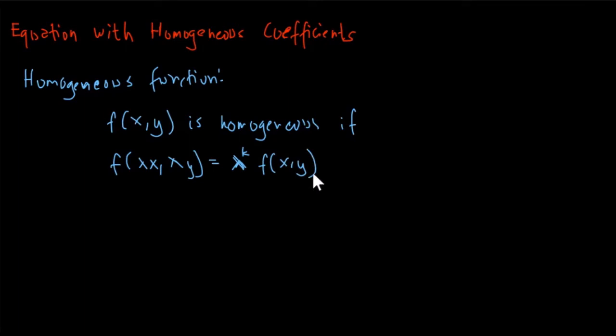So if you are given a function in terms of x and y, we substitute the values of x and y with λx and λy. If the resulting new function can be simplified to give λ^k multiplied by the original given function, that is the test of homogeneity, and we can determine if the given function is homogeneous or not.